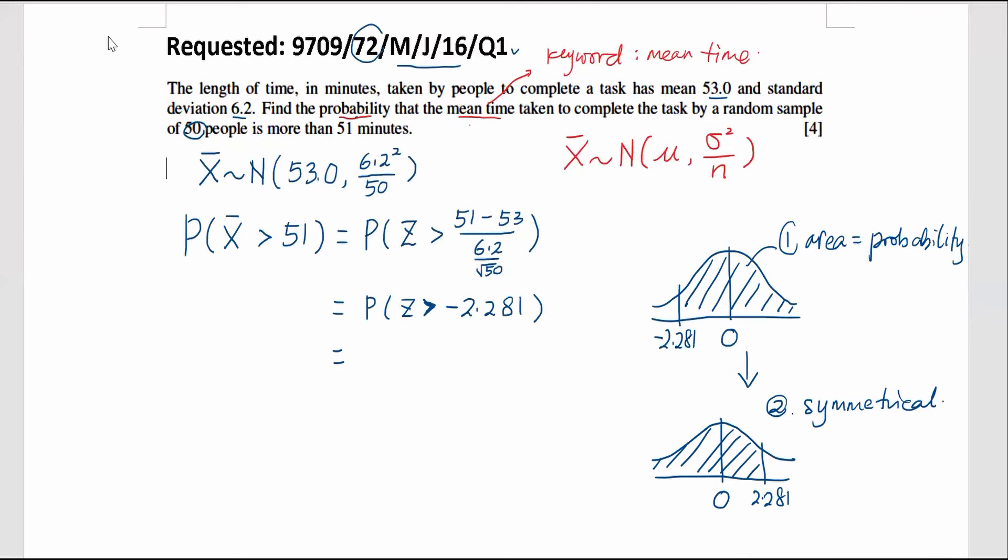All right. So I will write down like this: 2.281. So now we need to refer to the normal distribution table to get the probability.